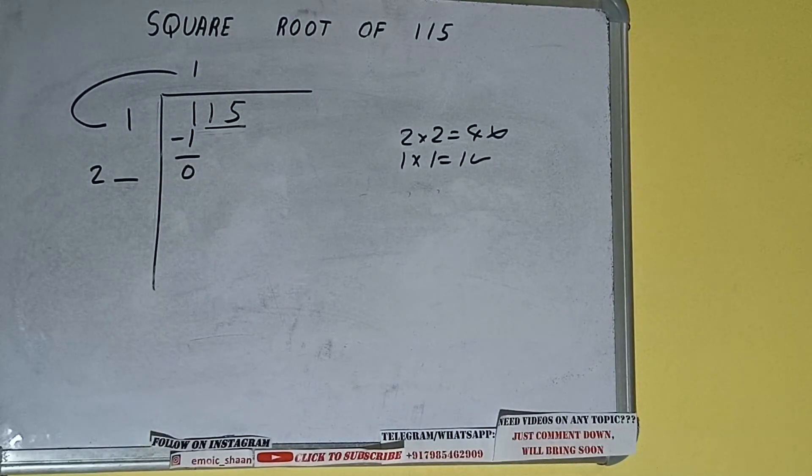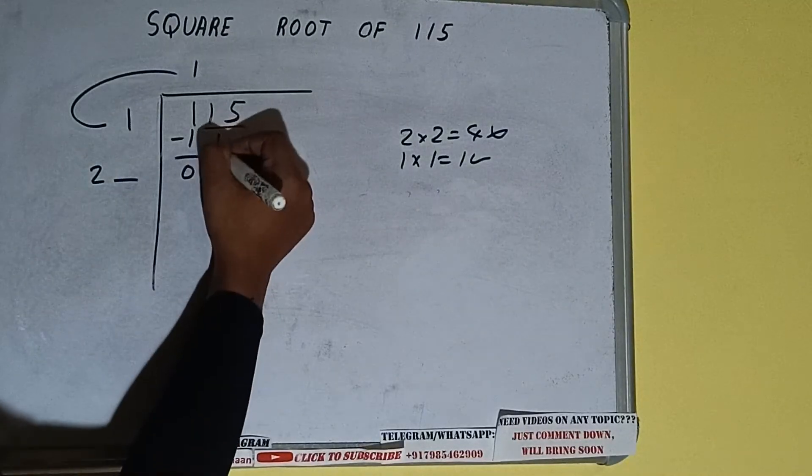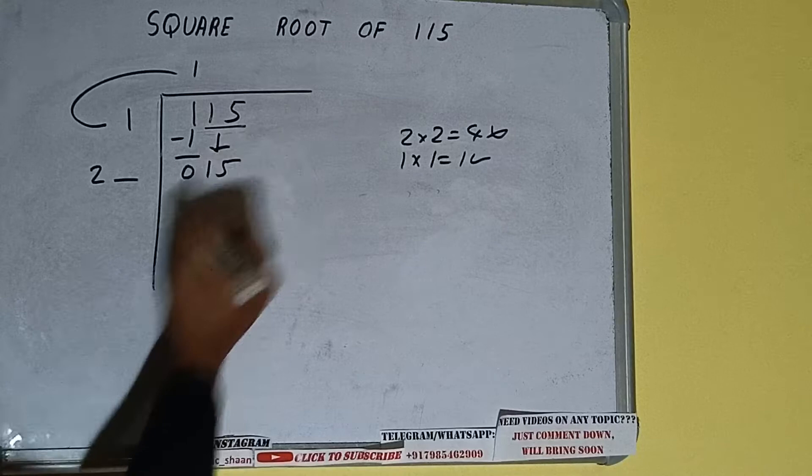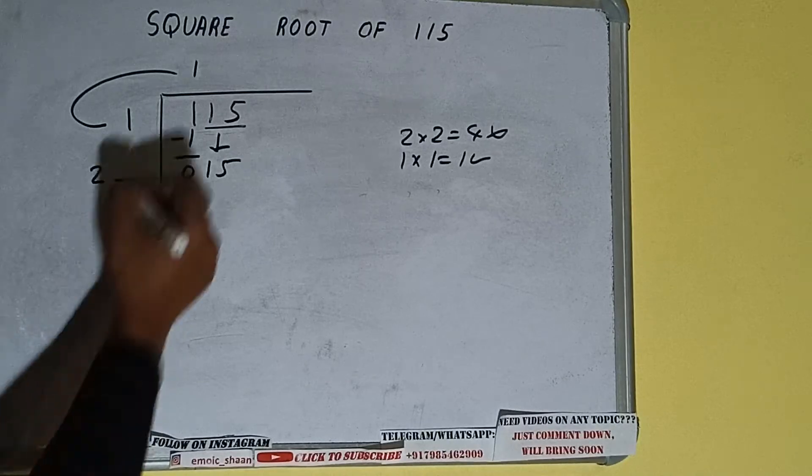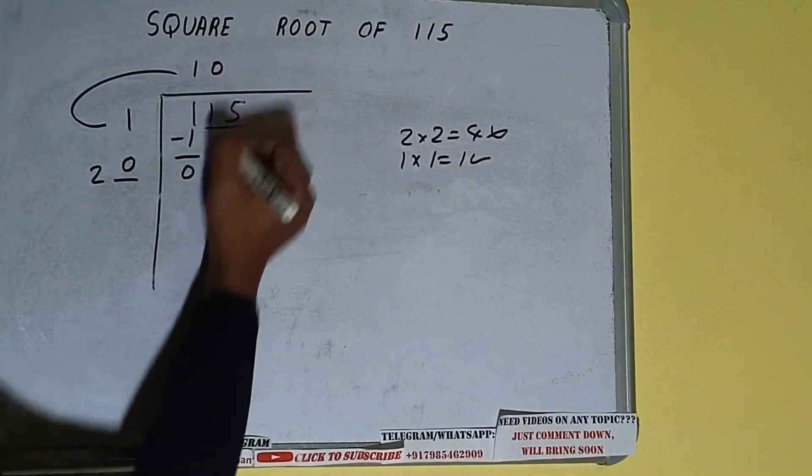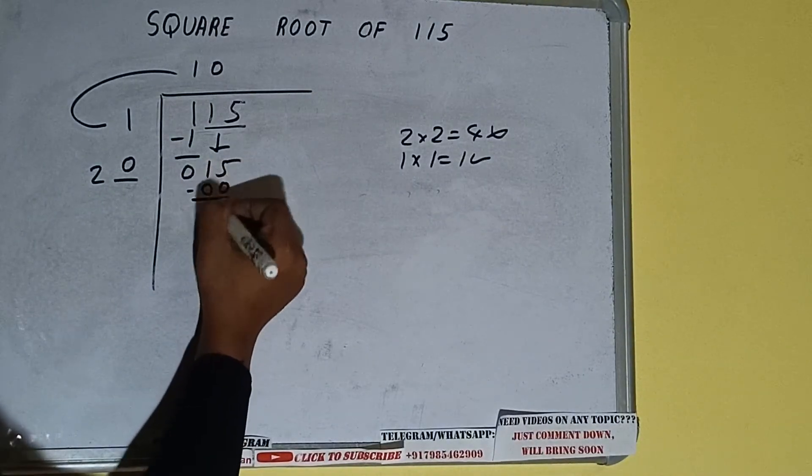Write it here and keep a digit extra and this number we need to make it big. So bring the next pair down and it will be 15. Now whatever number we write here we have to write here also. So we can write 0 here and 0 here. 15 will be left.